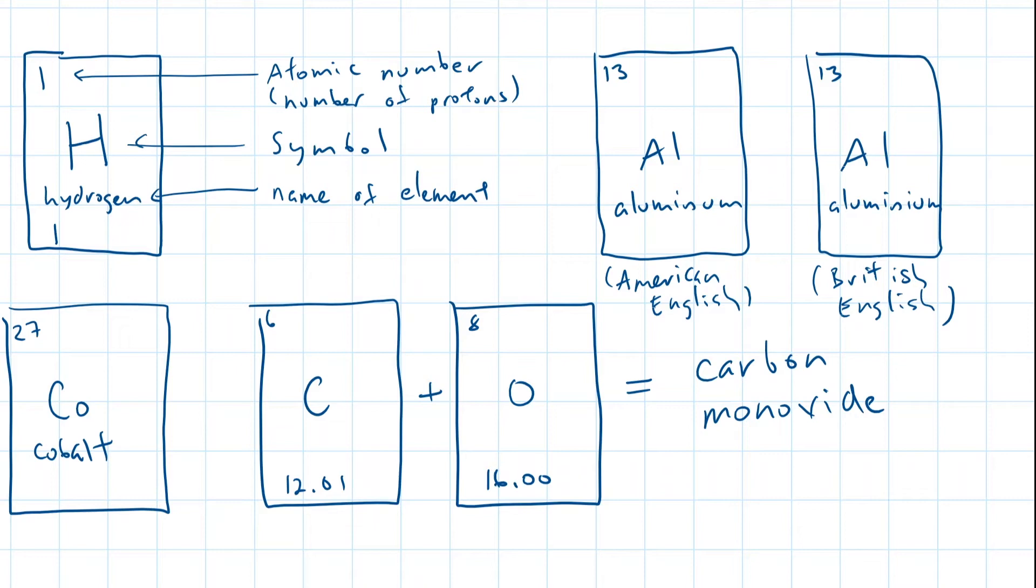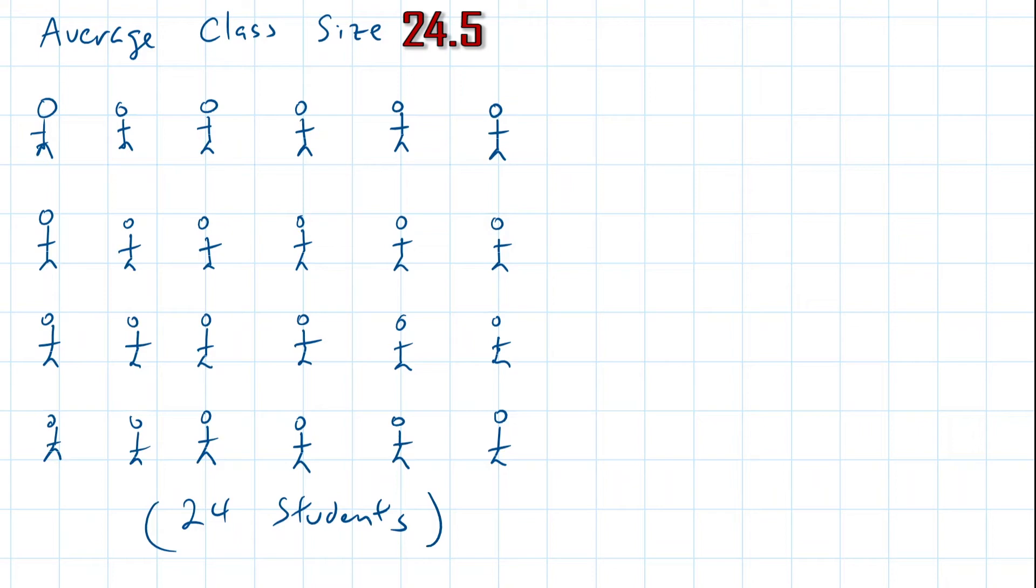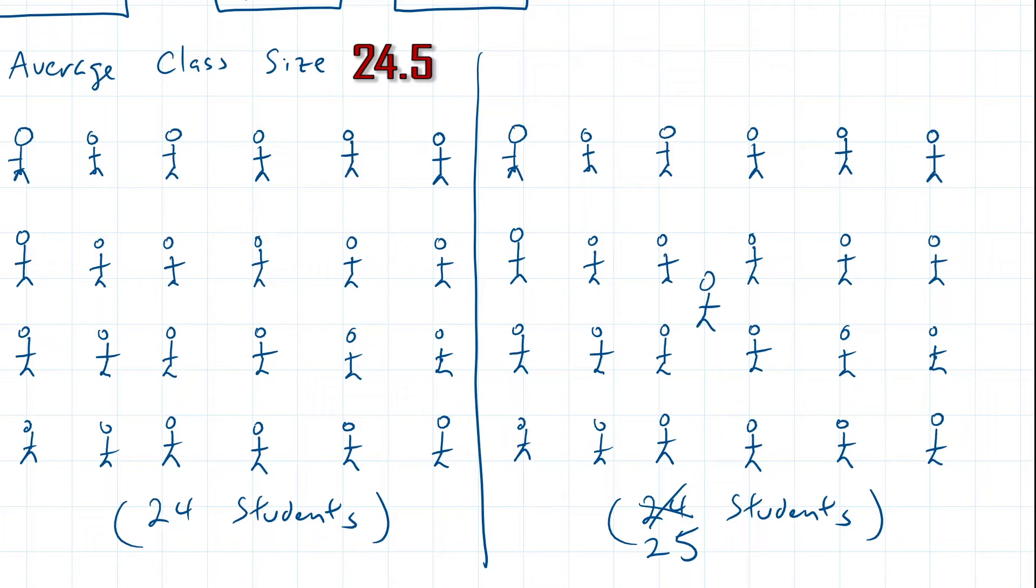As you might have learned last year, it is impossible to have half a proton or even a fraction of a neutron. Let me give you an example. Let's say the average number of students in a classroom is 24.5. Does that mean that in every classroom, you'll find 24 full-bodied students and half a student sitting in one of the seats? Instead, 24.5 means that sometimes you might find 24 students in a classroom, and sometimes you might find 25. This year, let's just keep it simple. For the purposes of grade 10, let's round the atomic mass to the nearest whole and call it a day.